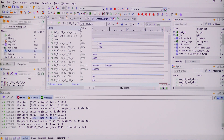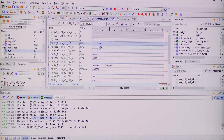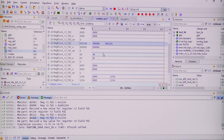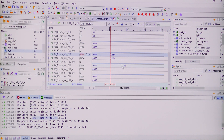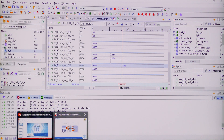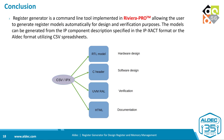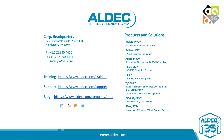In the waveform, we can see how the value is propagated from register R1 into R2, then into R3 and R4. In summary, this is a command-line tool implemented in Riviera Pro that allows users to generate models automatically for design and verification purposes. The model can be generated from an IP component description specified in an IP-XACT file or ALDEK's own CSV spreadsheet format. That's all — thank you for watching.